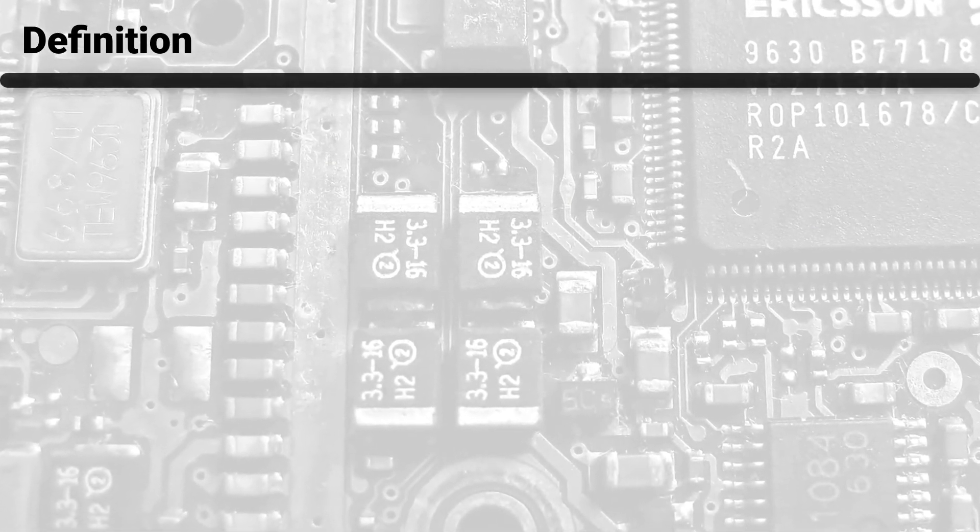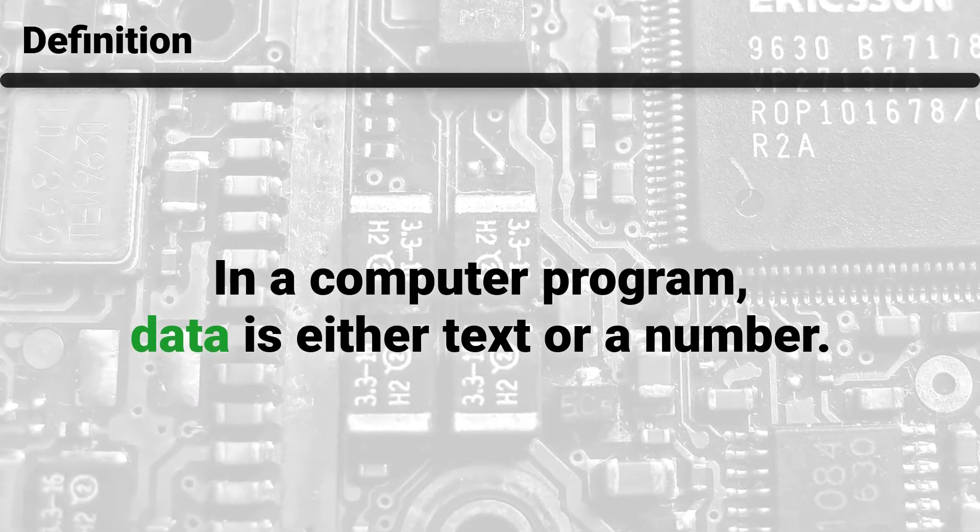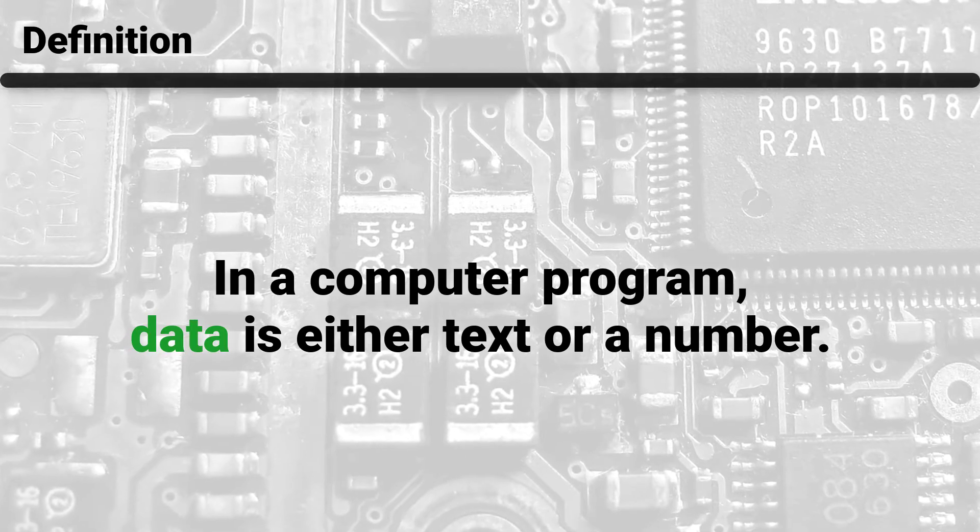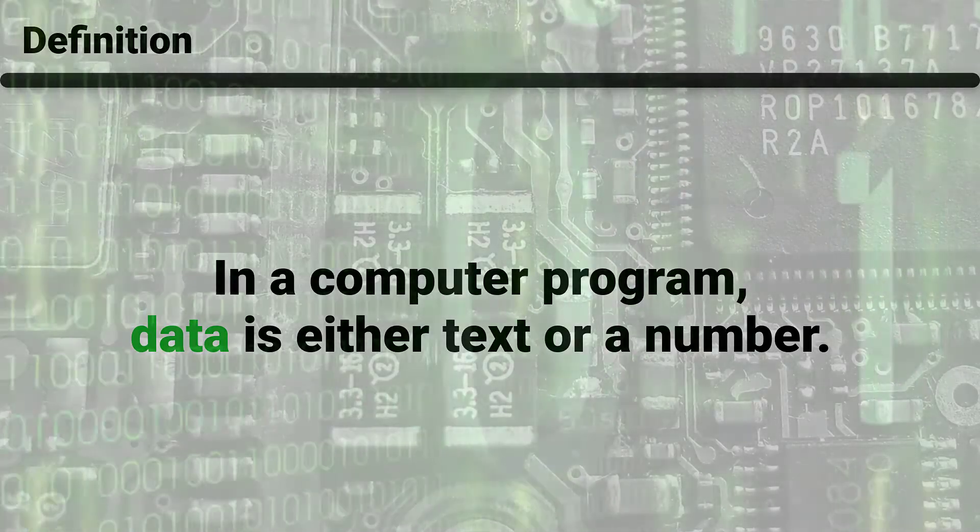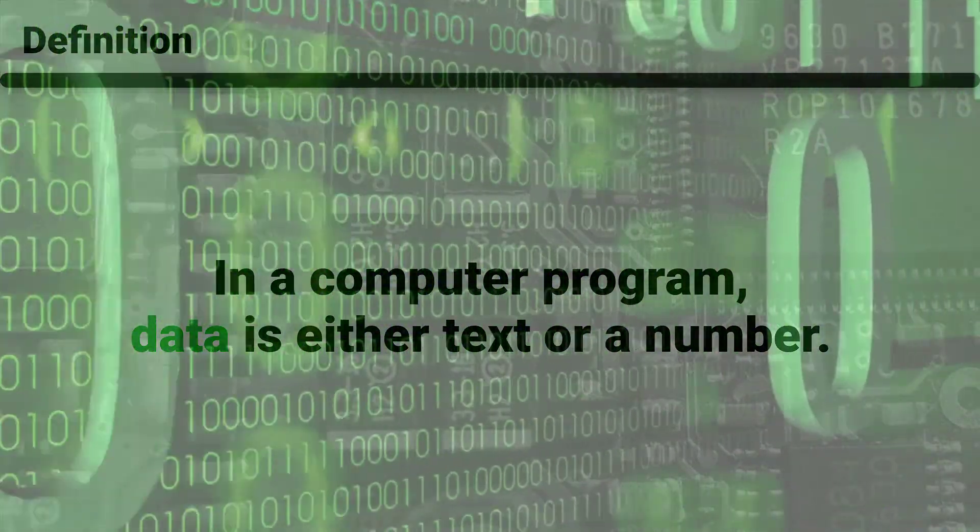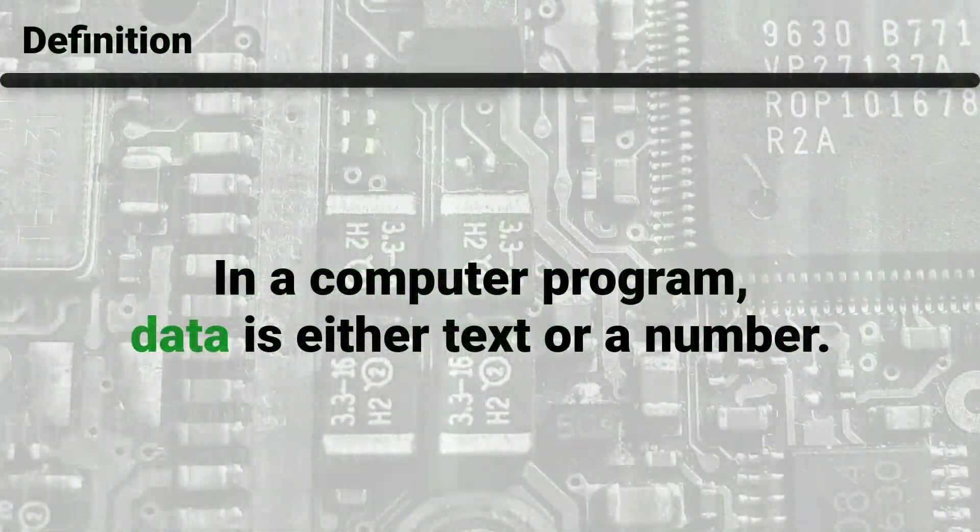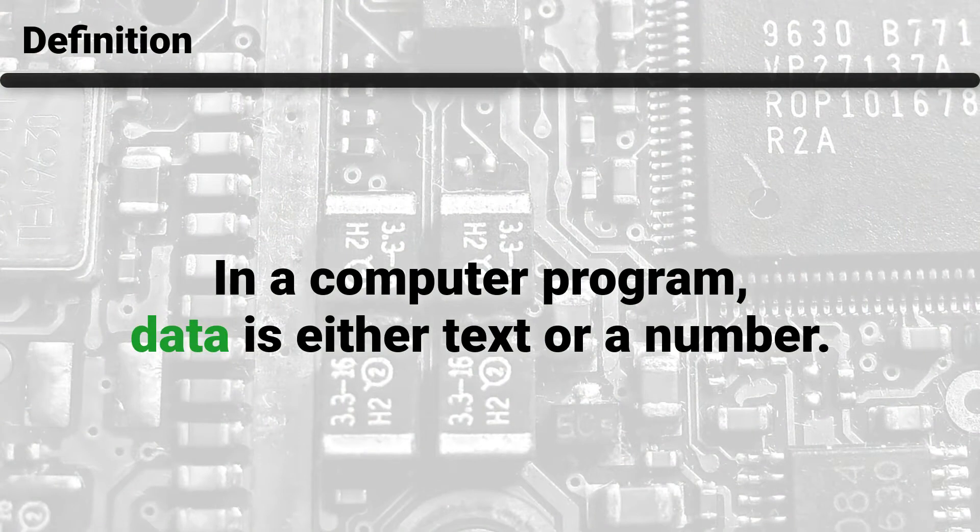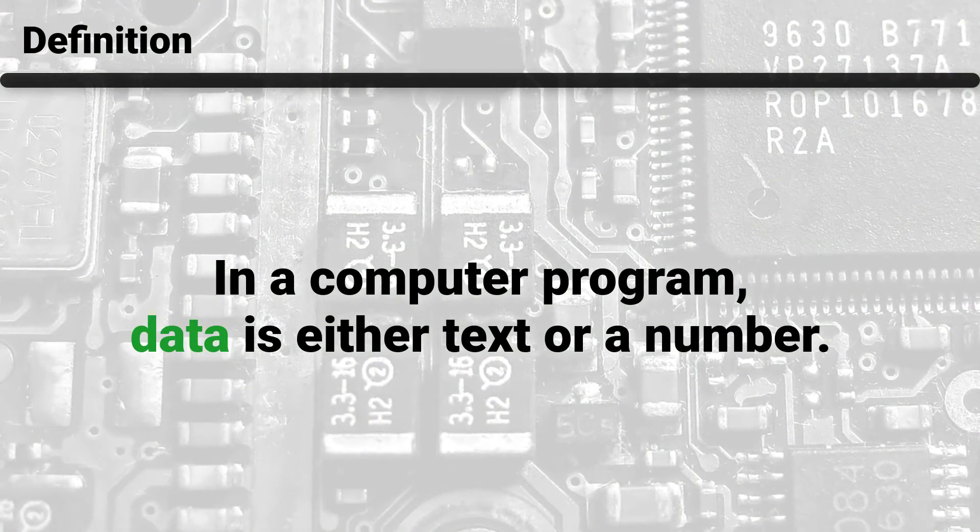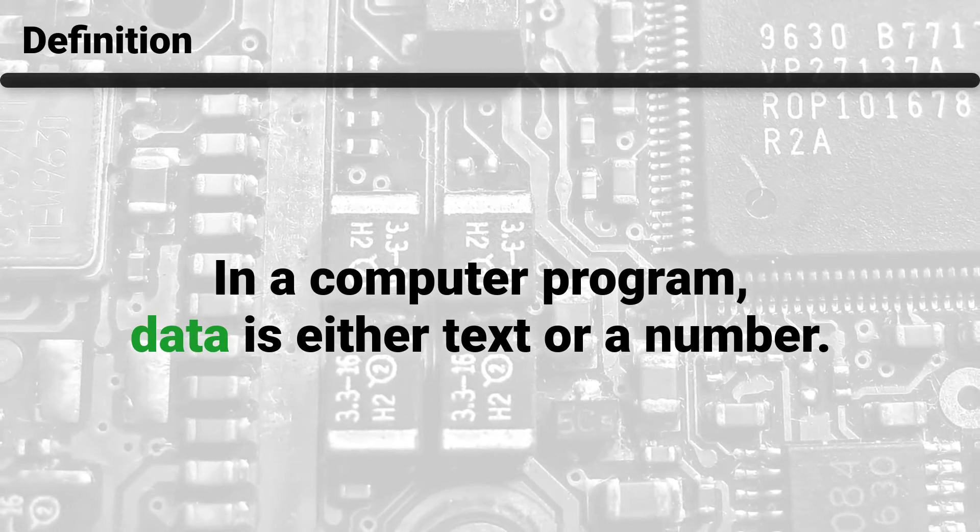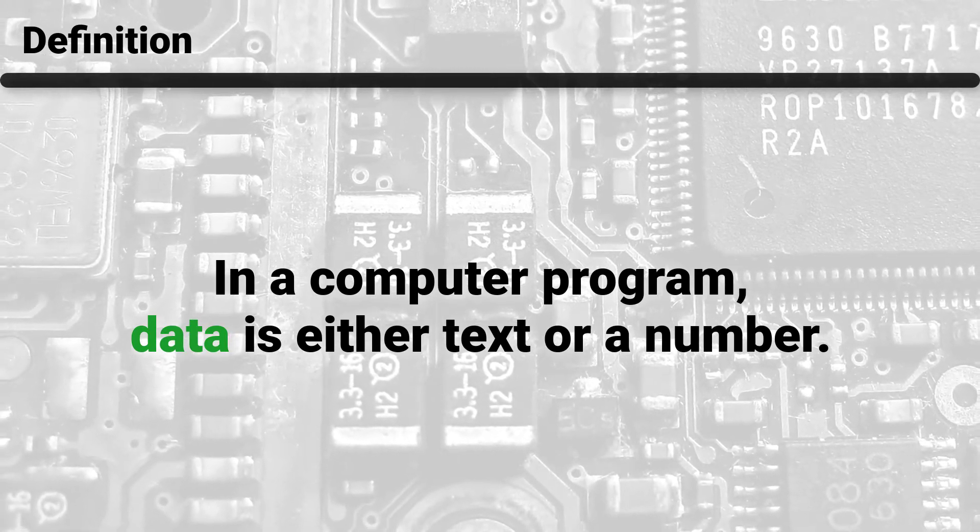In a computer program, data is either text or a number. You may have heard before that computers only deal with zeros and ones. This is true for the actual computer hardware, but nowadays most programs deal with data that comes in the form of numbers or text. As programmers, we almost never deal with zeros and ones directly. This type of programming is done by specialists. Our aim here is to use programming as a general purpose tool.